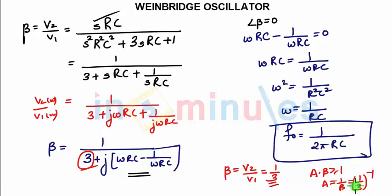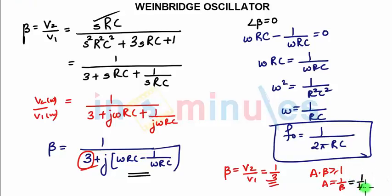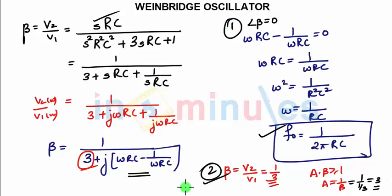Since β = 1/3, then 1/β = 3, so the value of A should be 3. This is how we have derived the relation for frequency of oscillation by applying two criteria — criteria 1 and criteria 2 — for conditions of oscillations under Barkhausen.